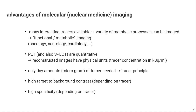So what are the advantages of molecular imaging in nuclear medicine? The contrast is created by a given radiotracer, and since we have many interesting tracers or molecules, by using different molecules we can image a variety of metabolic processes — glucose metabolism, bone metabolism, perfusion, neuroreceptor densities in the brain. That's why it's also called functional or metabolic imaging, and it's applied in many different clinical fields: oncology, neurology, cardiology, and more.